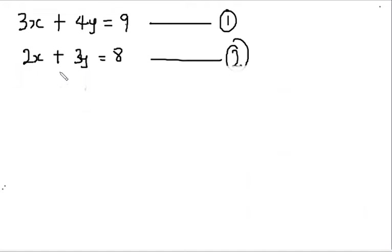The first step in solving simultaneous linear equations using the substitution method is to name your equations. They are already named here — there is equation 1 and equation 2.